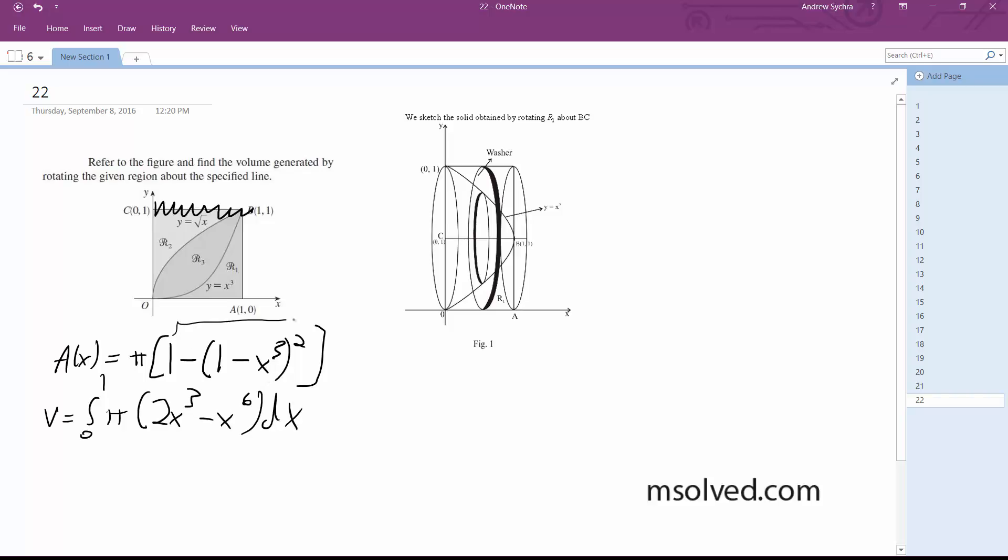After I multiply everything in here, it simplifies to that. This integrated ends up being equal to π times (2x to the 4th over 4 minus x to the 7th over 7) evaluated from 0 to 1.